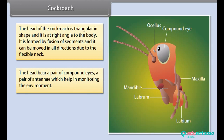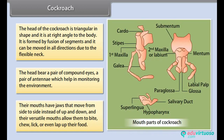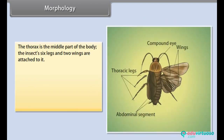The head bears a pair of compound eyes and a pair of antennae which help in monitoring the environment. Their mouths have jaws that move from side to side instead of up and down, and their versatile mouths allow them to bite, chew, lick or even lap up their food. The thorax is the middle part of the body. The insect's six legs and two wings are attached to it.